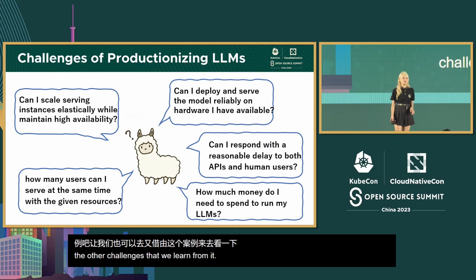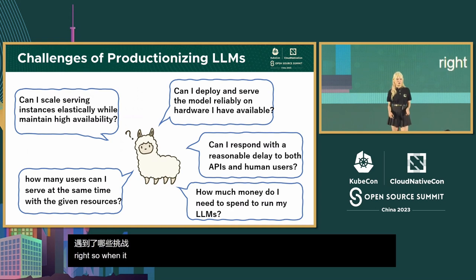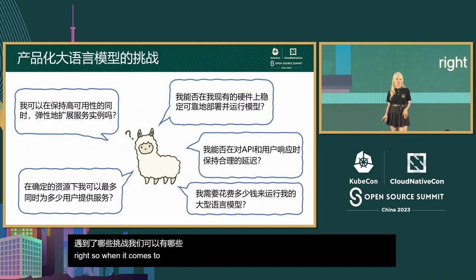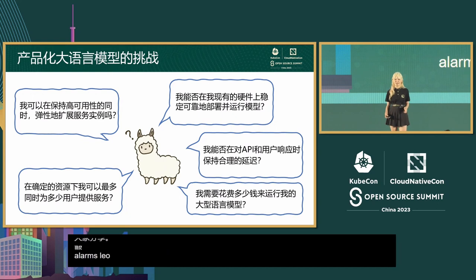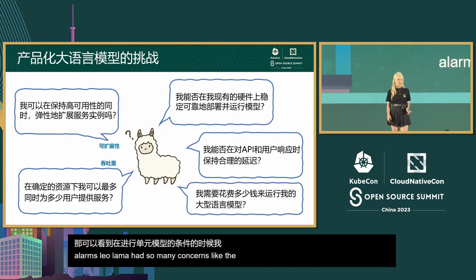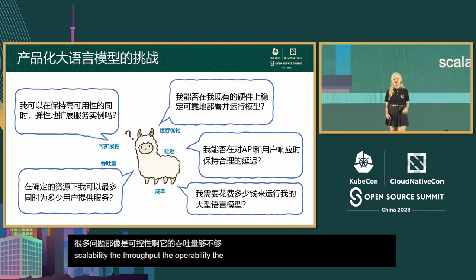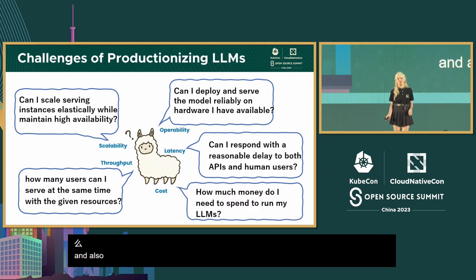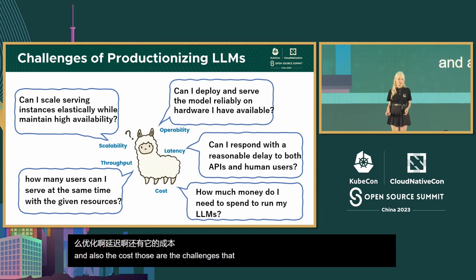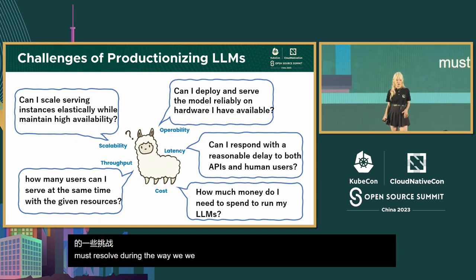When it comes to productionizing LLMs, there are so many concerns: scalability, throughput, operability, latency, and also cost. Those are the challenges we must resolve during the process of productionizing LLMs.